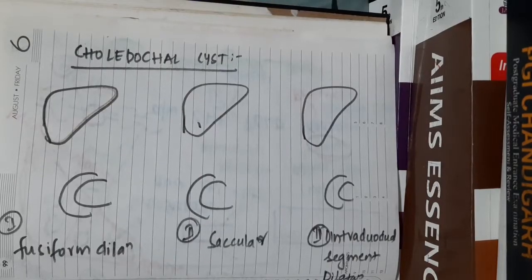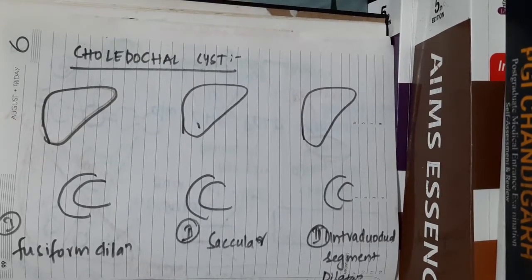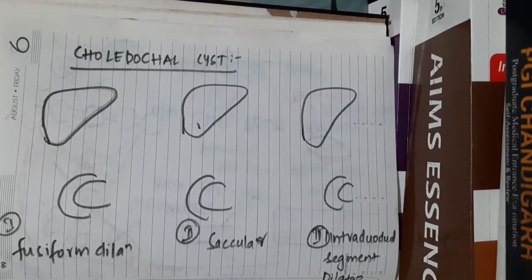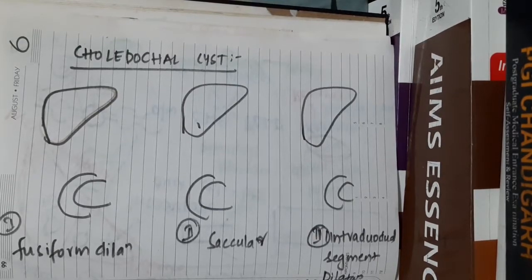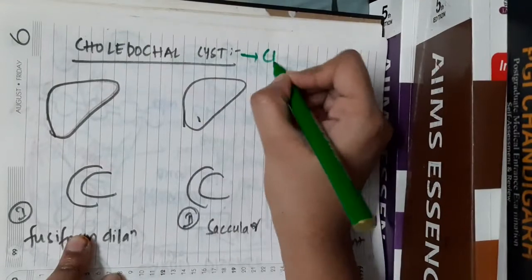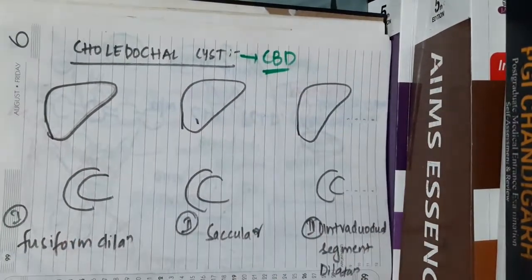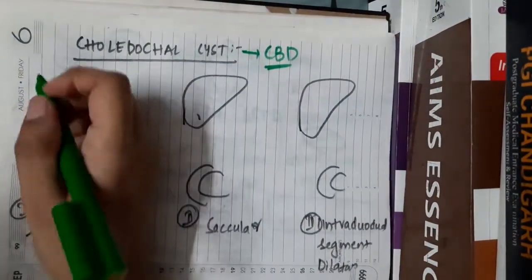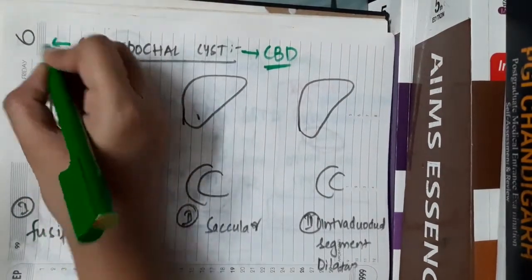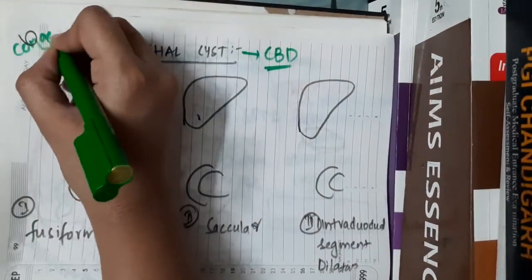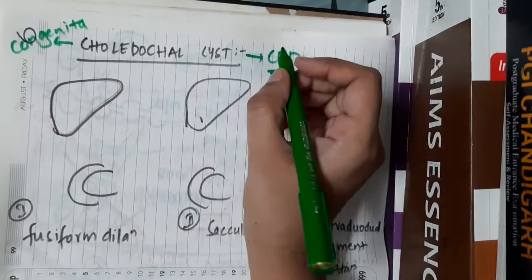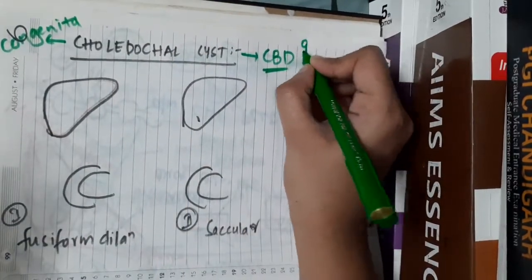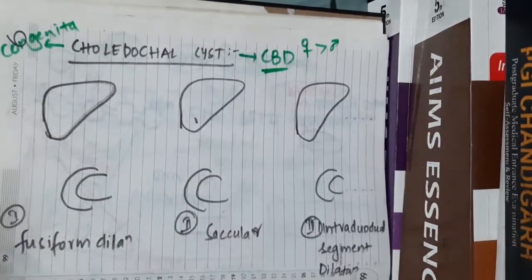Hello friends, let us now learn some important points about the choledocal cyst. Choledocal cyst is cystic enlargement of the bile duct — the common bile duct starts to enlarge. It is a congenital condition which is most commonly seen in females more than males.